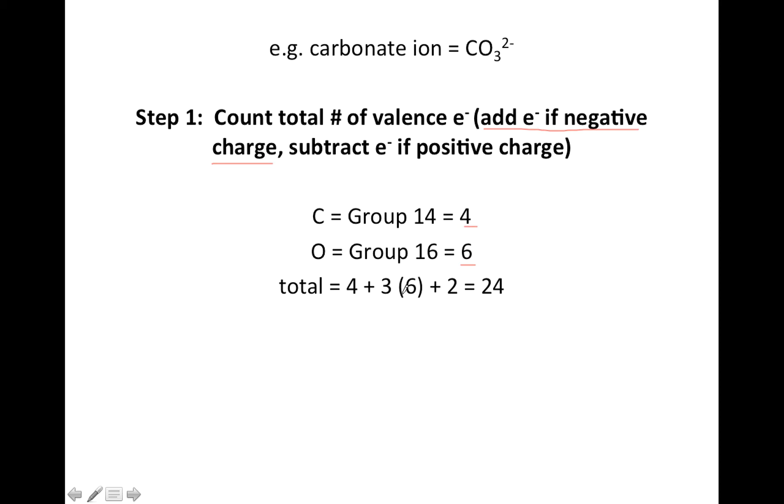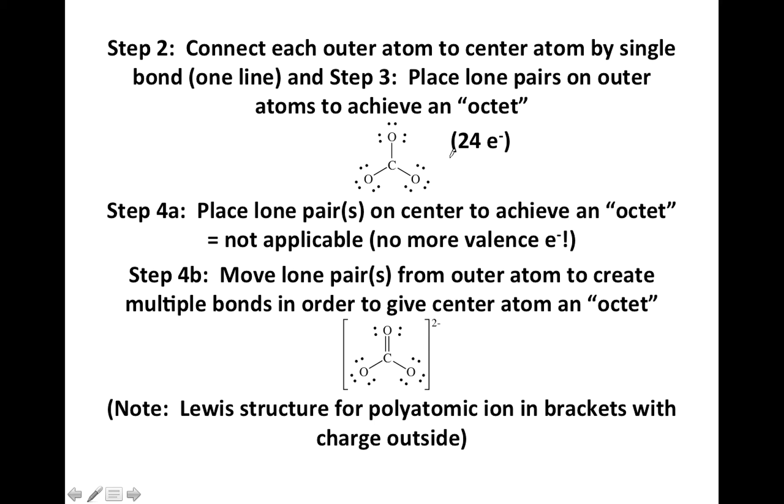Carbon's group fourteen, four valence, oxygen group sixteen, six valence, and there's three of them, but since there's a negative two charge, we're going to add two extra electrons. And that will give us a total of twenty-four that will need to be in our final Lewis structure.